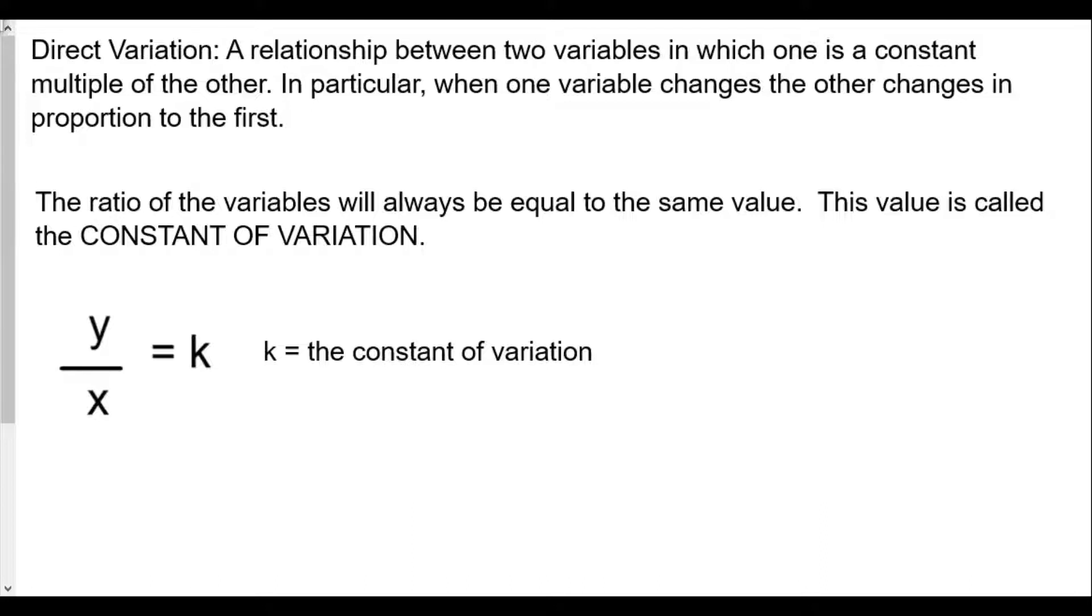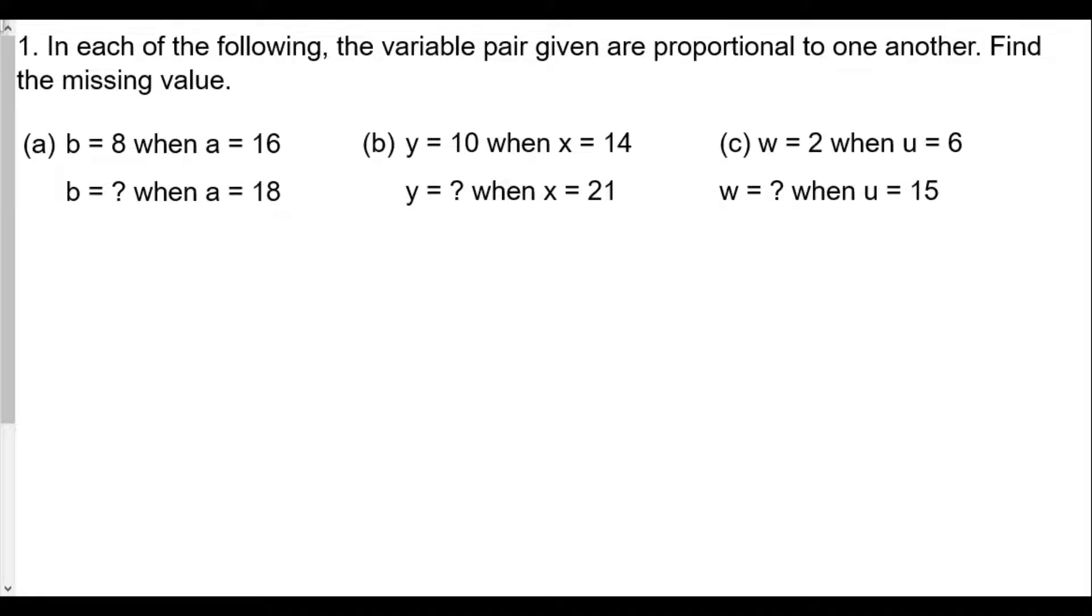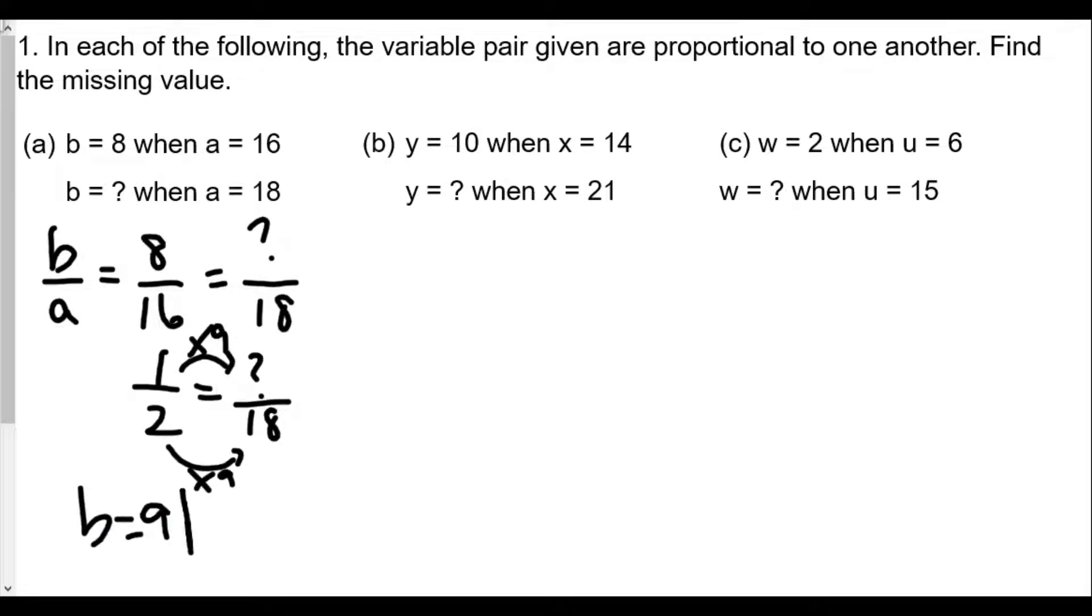In our first question we have for our homework, number one, in each of the following, the variable pair given are proportional to one another. Find the missing value. So we have in this case our first set of variables will be b is 8 and a is 16. So we set up our ratio b over a. When b is 8, a is 16. We want to find out the b value when a is 18. One of the things I recommend before cross-multiplying is to simplify the fraction 8 over 16, which becomes 1 over 2. So 1 over 2 equals the unknown over 18. I know that 2 times 9 is equal to 18, therefore multiply the numerator by the same value of 9. Therefore the b value is going to be 9.